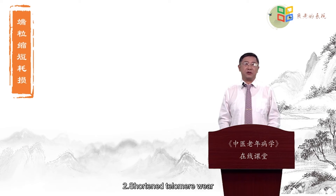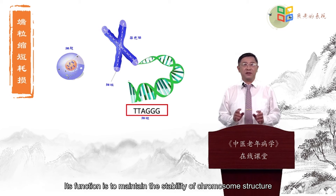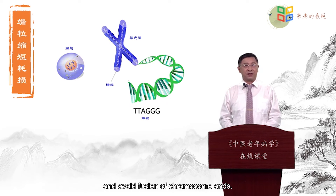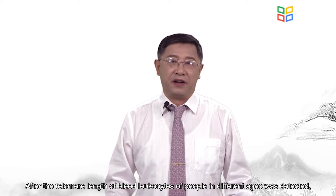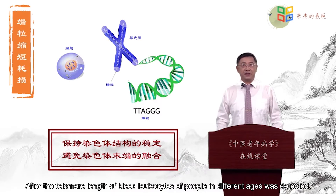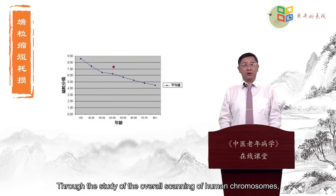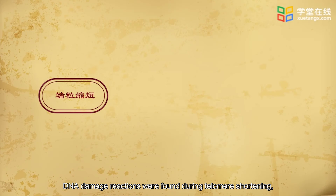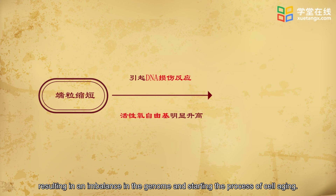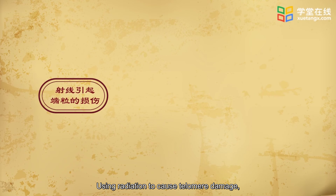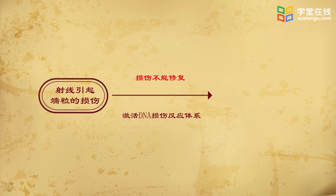Second, shortened telomeres. Telomeres are special structures composed of short tandem repeats located at the ends of chromosomes. Their function is to maintain the stability of chromosome structure and avoid fusion of chromosome ends. Telomeres keep their length stable by the enzyme telomerase. After detecting telomere length in blood leukocytes of people of different ages, it was found that telomeres of the elderly were significantly shortened and telomere length was significantly related to age. Through scanning of human chromosomes, DNA damage responses were found during telomere shortening, and reactive oxygen radicals were significantly increased, resulting in an imbalance in the genome and starting the process of cell aging. Using radiation to cause telomere damage, it can be observed that the damage cannot be repaired, and the DNA damage response system is continuously activated, leading to cell aging.